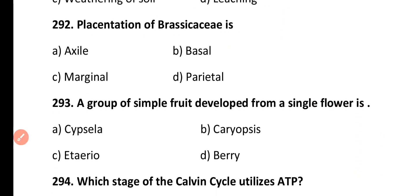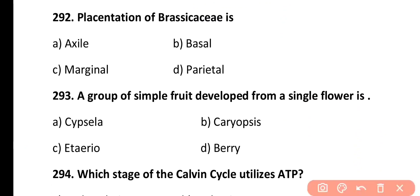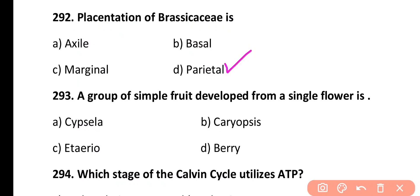Question 292. Placentation type of Brassicaceae family is: axile, basal, marginal, or parietal. Correct answer is Option D. The Brassicaceae family has parietal placentation.